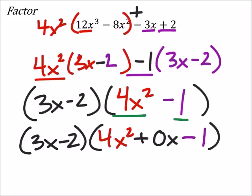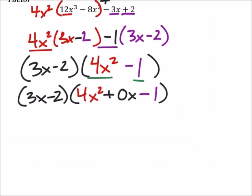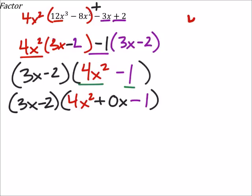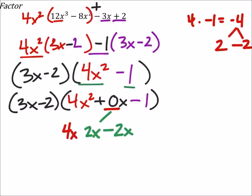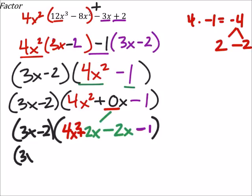So like we've been talking about, we've got to look at the a value and the c value, multiply those two together. So let me give myself some space. So I've got four times negative one, which is negative four. And we need two of these factors to add together and give us the b value, which is zero. So I'm just going to use two and negative two. So the zero is going to split into a two x and a negative two x. And we still have the four x squared plus that two x minus one. So again, none of this is really affecting that three x minus two.